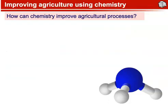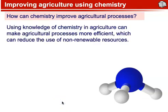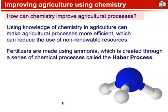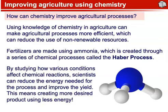Improving Agriculture Using Chemistry. How can chemistry improve agricultural processes? Using knowledge of chemistry in agriculture can make agricultural processes more efficient, which can reduce the use of non-renewable resources. Fertilizers are made using ammonia, which is created through a series of chemical processes called the Haber Process. By studying how various conditions affect chemical reactions, scientists can reduce the energy needed for the process and improve the yield, creating a more desired product using less energy.